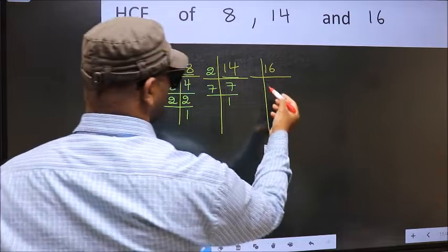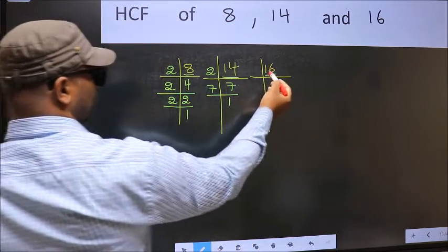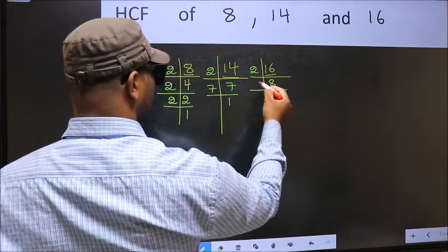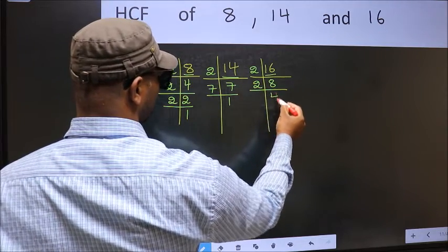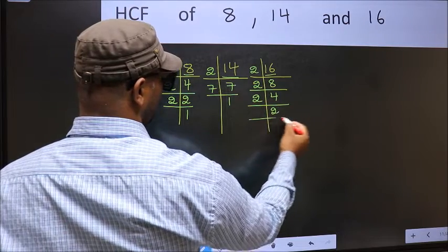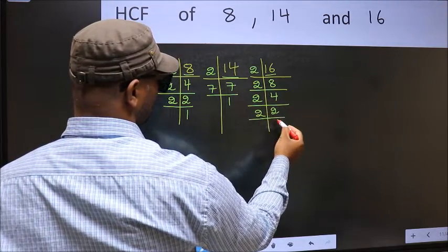Now the other number 16. 16 is 2 times 8. 8 is 2 times 4. 4 is 2 times 2. Now 2 is a prime number so 2 times 1 is 2.